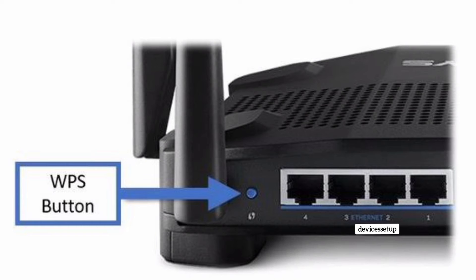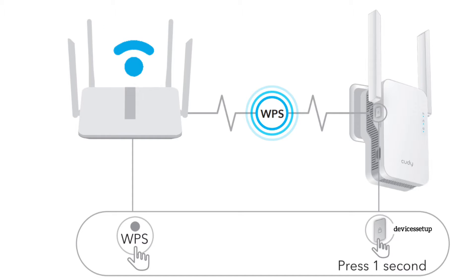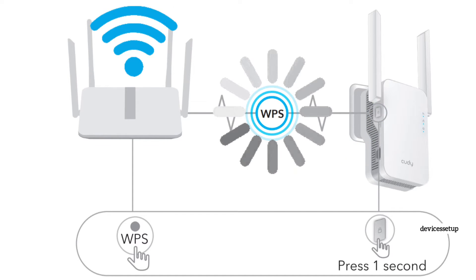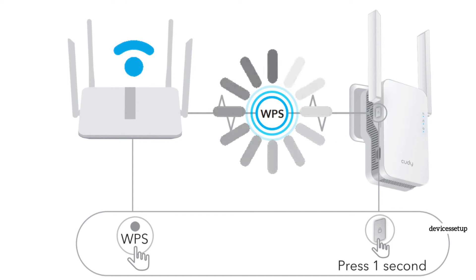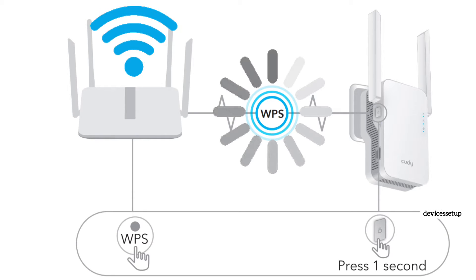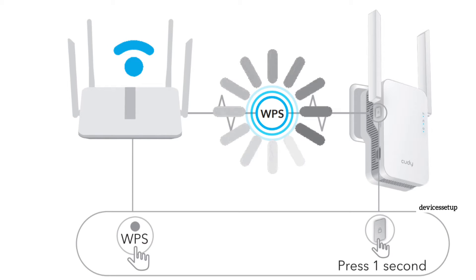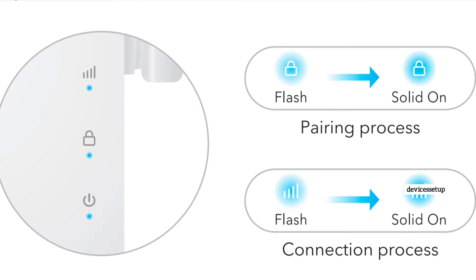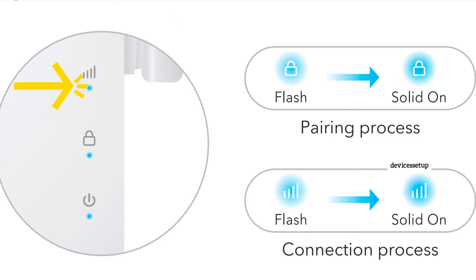For the WPS setup, press the WPS button on the router and within two minutes press the WPS button on the extender. You will see a blinking light on both the router and the extender, and within two minutes the light will stop blinking and you will get a solid internet LED on the extender.